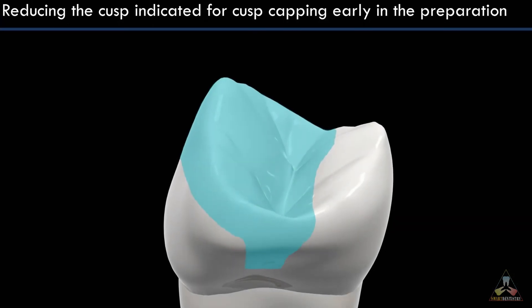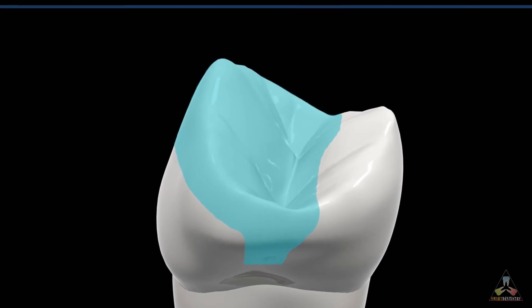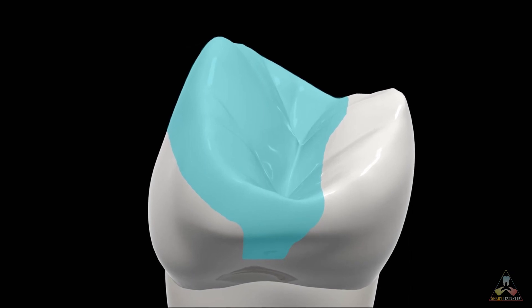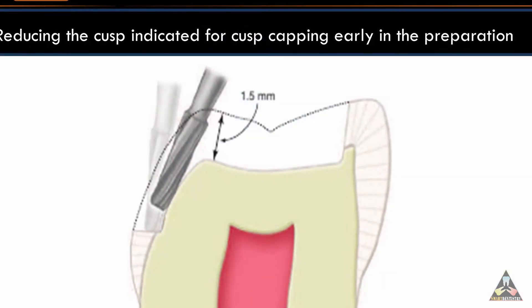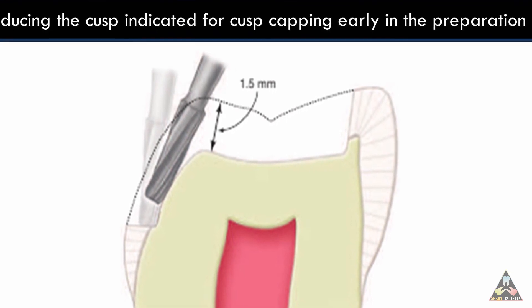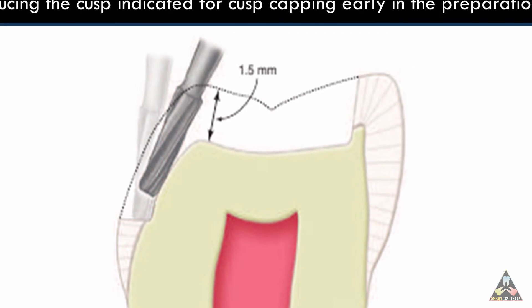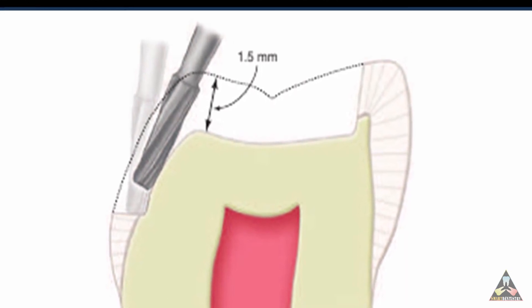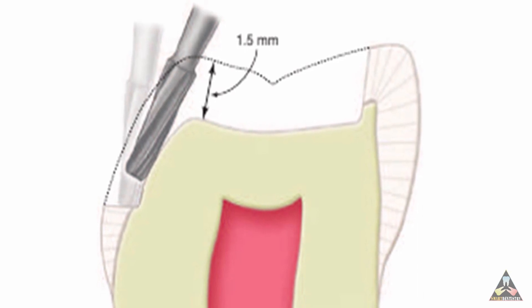At last, reducing the cusp indicated for cusp capping should occur early in the tooth preparation. Cusp capping is a resistance feature and a feature of outline form, and it will enhance the resistance of the tooth to fracture. Some may wonder why a resistance feature is mentioned in convenience form. But in truth, if it is decided to do a cusp capping procedure, then reduction of the cusp must be done very early in the tooth preparation. This will enhance the operator's ability to assess and perform the tooth preparation in less accessible areas more easily and conservatively. Thus, reduction of the cusp indicated for cusp capping is also a convenience feature.